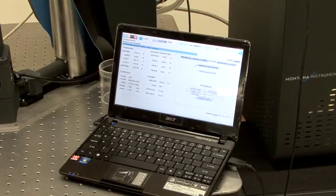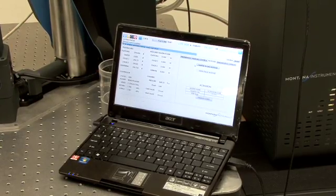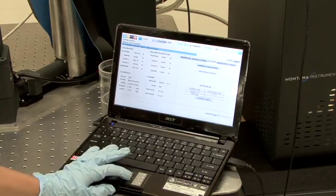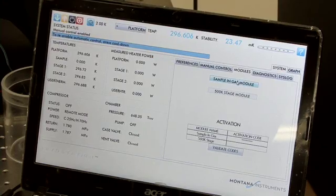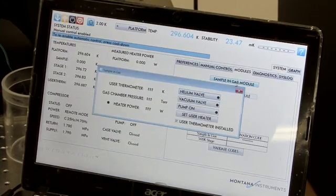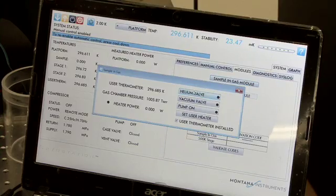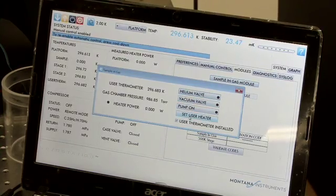The sample and gas module can be controlled with the user interface under the system tab and then go to modules. Then simply select sample and gas module and the panel that comes up can be used to control everything with the sample and gas.